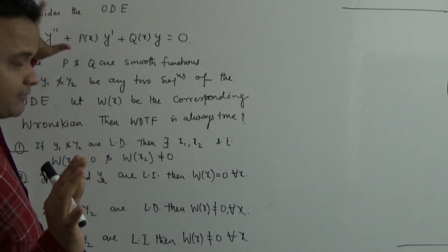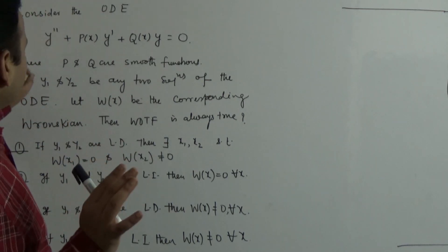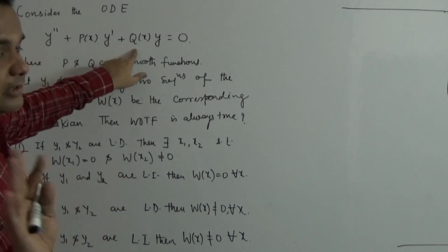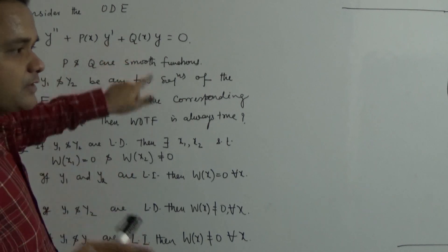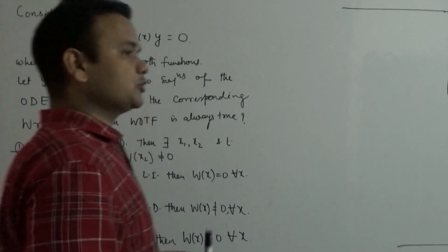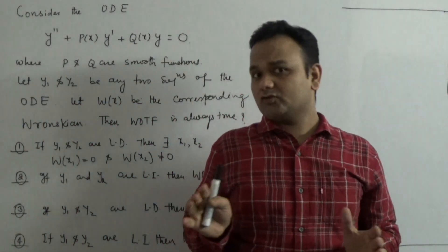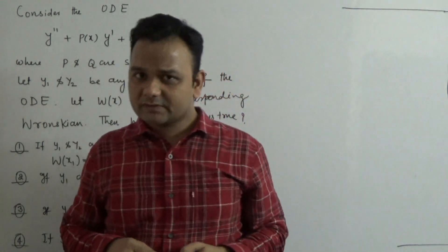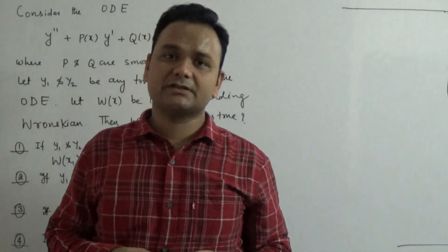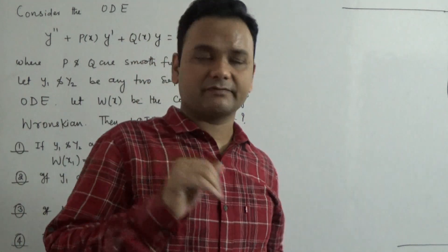So the differential equation is given, and p and q are given as smooth functions. First of all, you should know what smooth functions are. Smooth functions are functions which are differentiable.